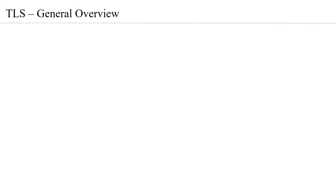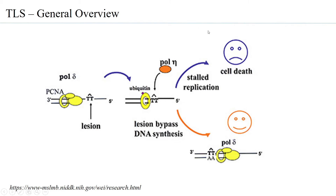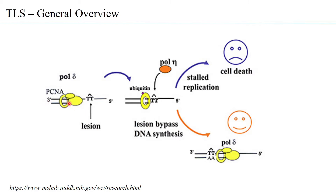Let us look at a general overview of TLS. Consider that a normal replicating enzyme is carrying out replication of DNA and it reaches an adduct — a damaged lesion. The damage shown here is a thymidin dimer, which is a bulky adduct. Generally, these bulky adducts cannot get into the active site of the normal replicating DNA polymerases, and so the polymerase would basically stall at that point.